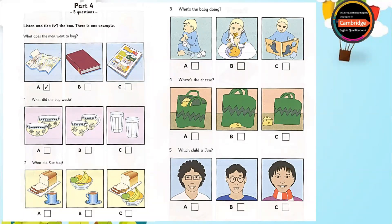Now listen to part four again. 1. What did the boy wash? I washed some of the things in the kitchen, Mum. Oh, good. The cups were very dirty. Did you wash them? Oh, I didn't see them. But the glasses are clean now. Well, thank you. Now, can you put those bowls in the cupboard, please?